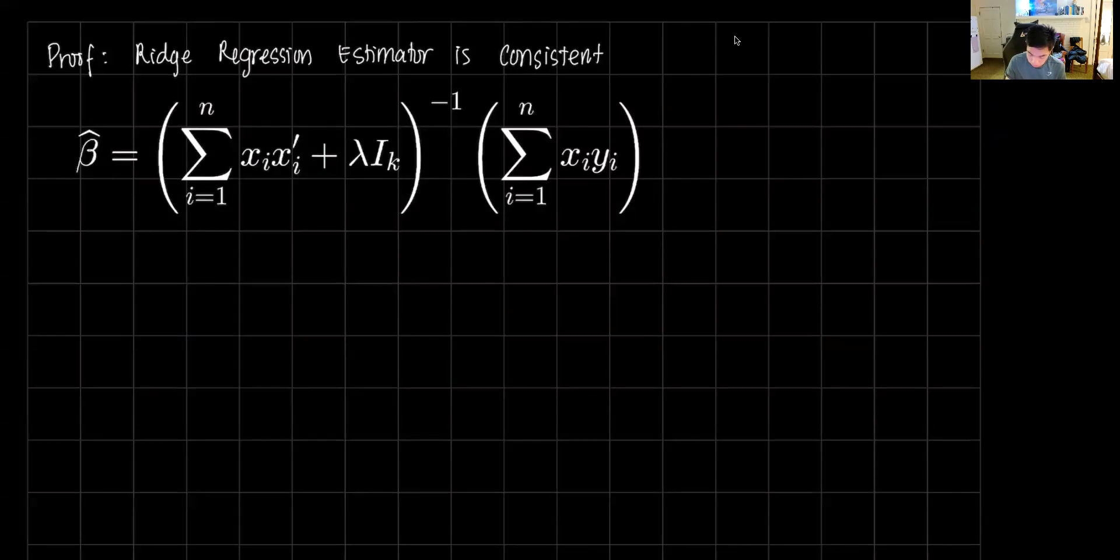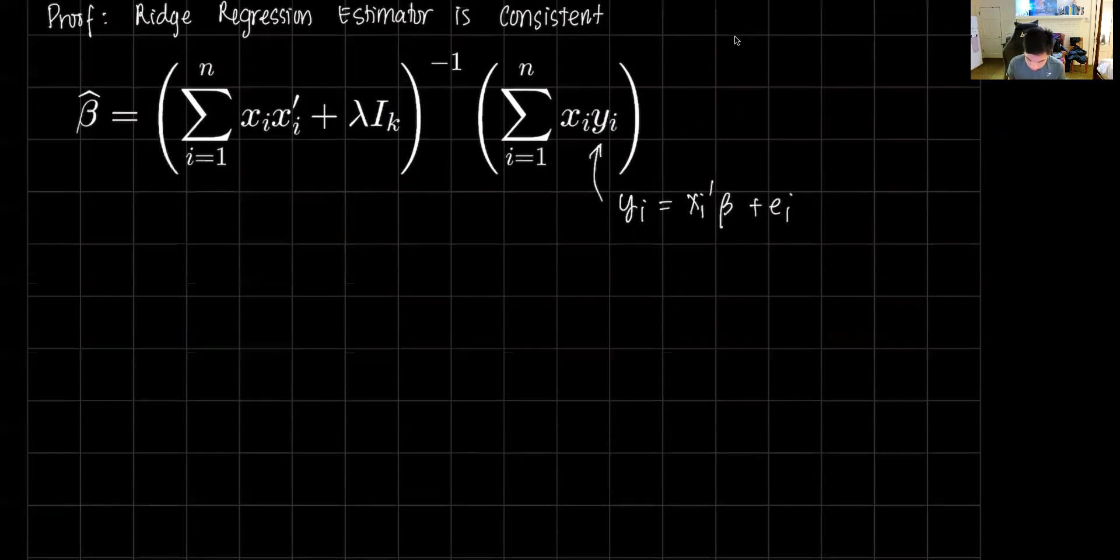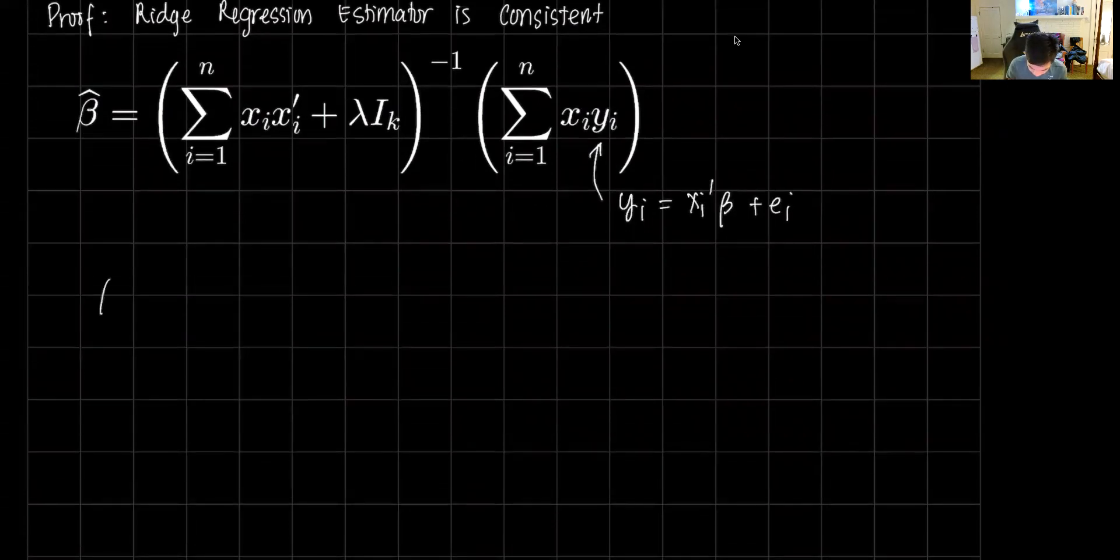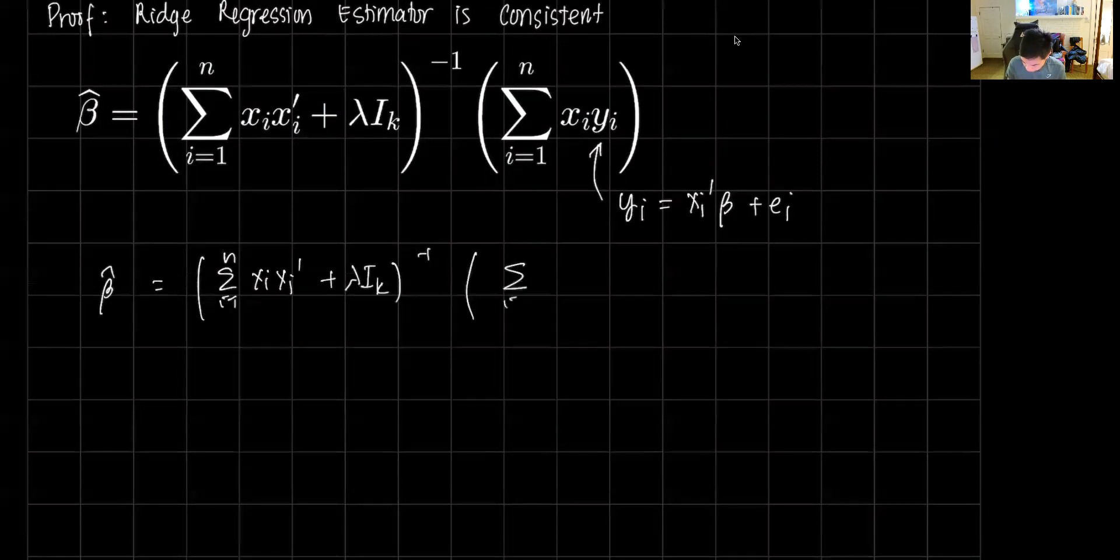We're gonna start off by plugging in a value for y sub i. So y sub i equals x i prime beta plus e sub i. Then we can rewrite it as beta hat equal to sum i equals 1 to n of x i x i prime plus lambda i k inverse, times sum i equals 1 to n of x i times x i prime beta plus e i.